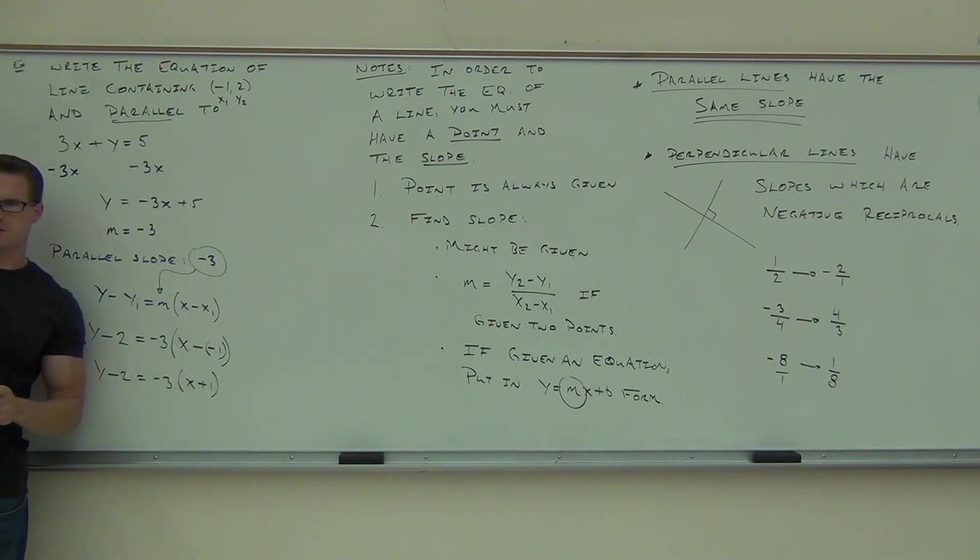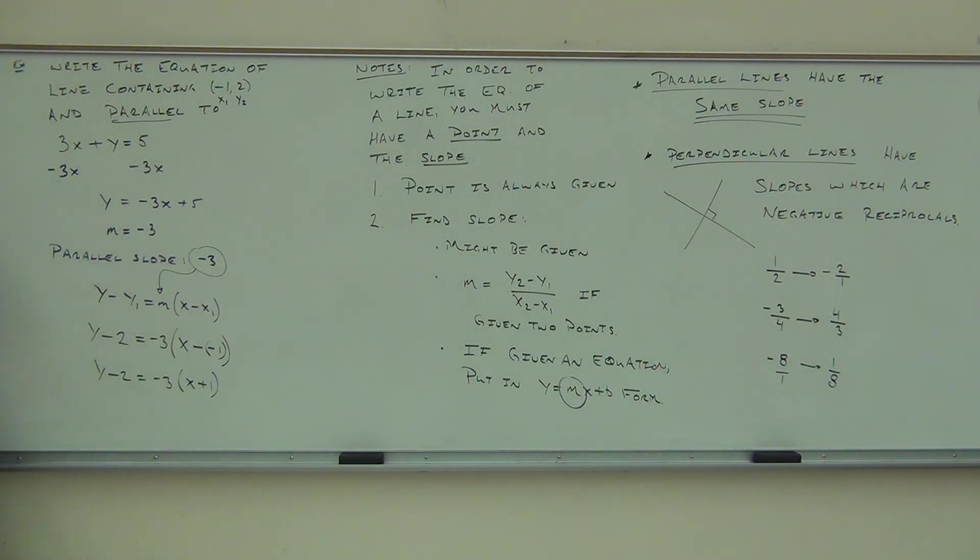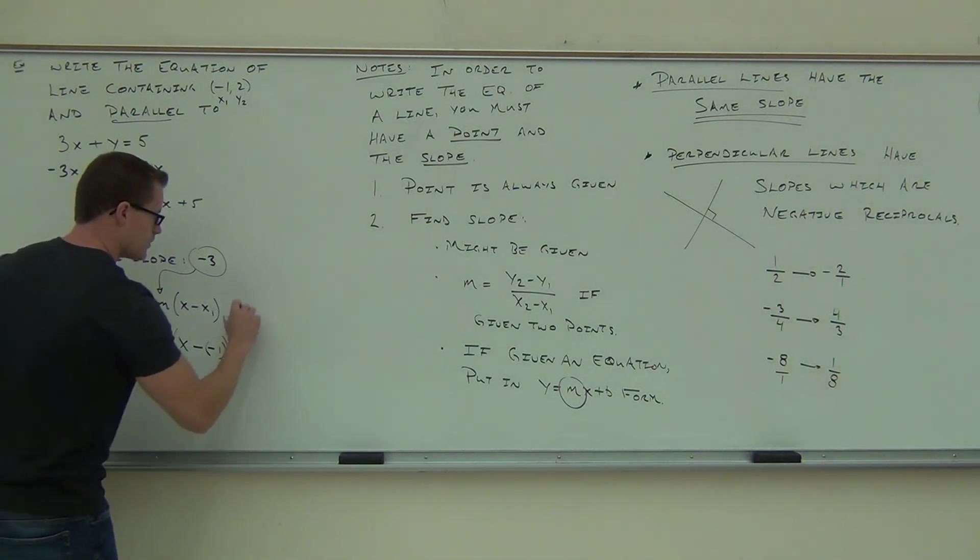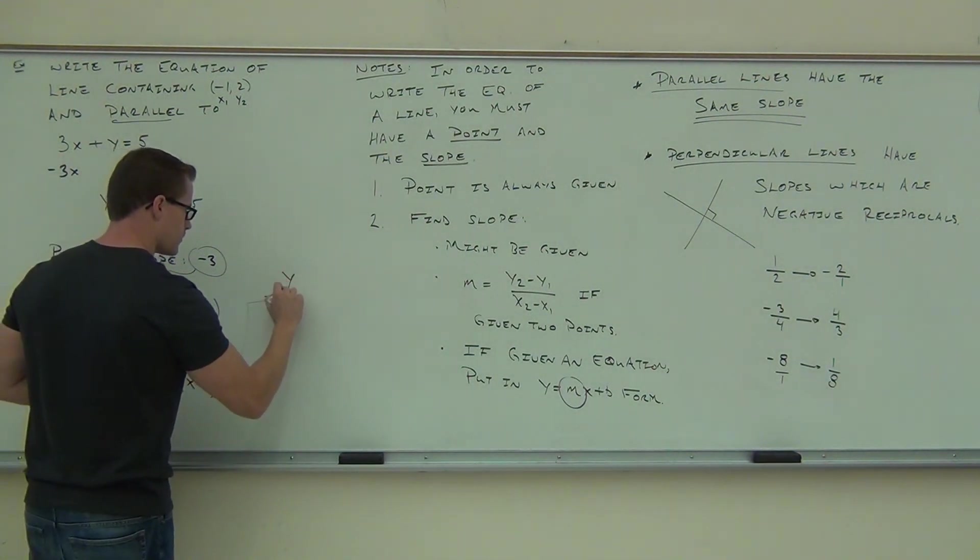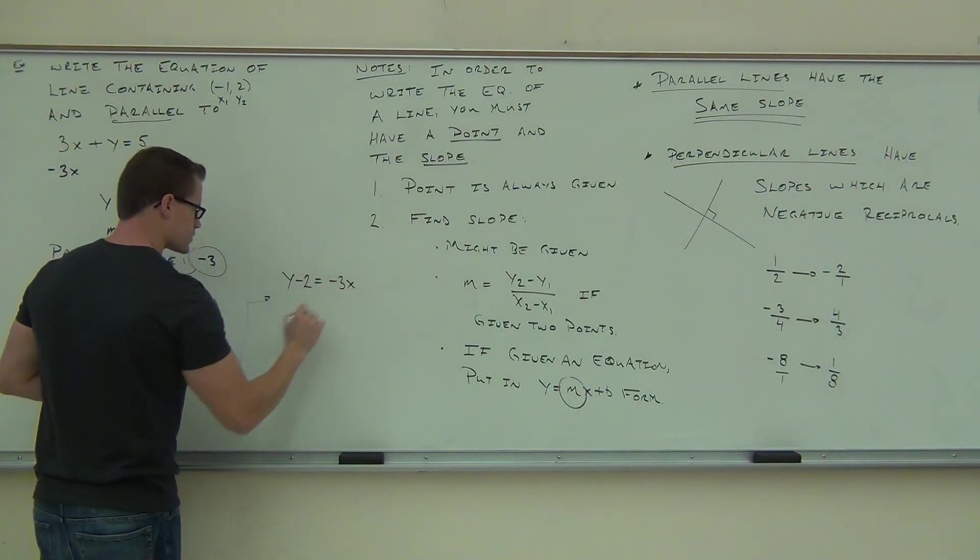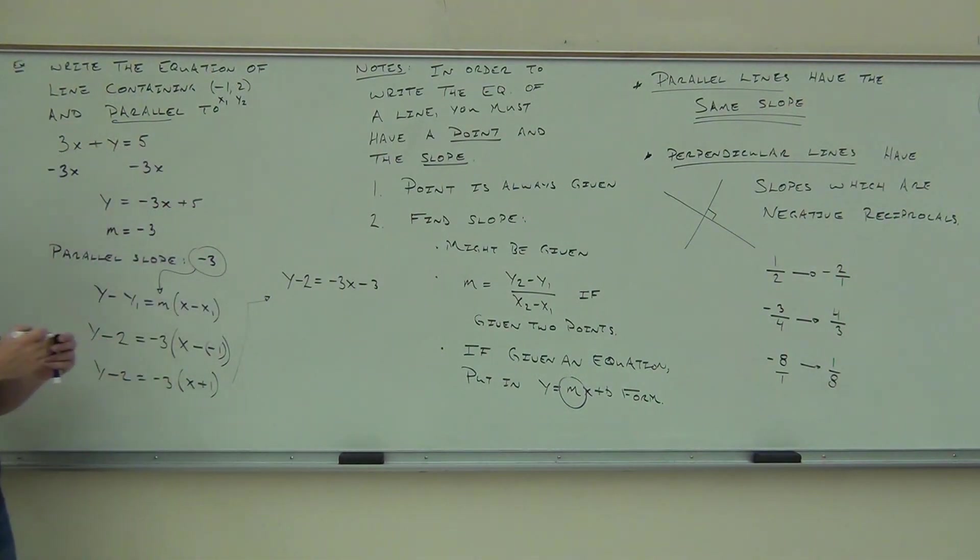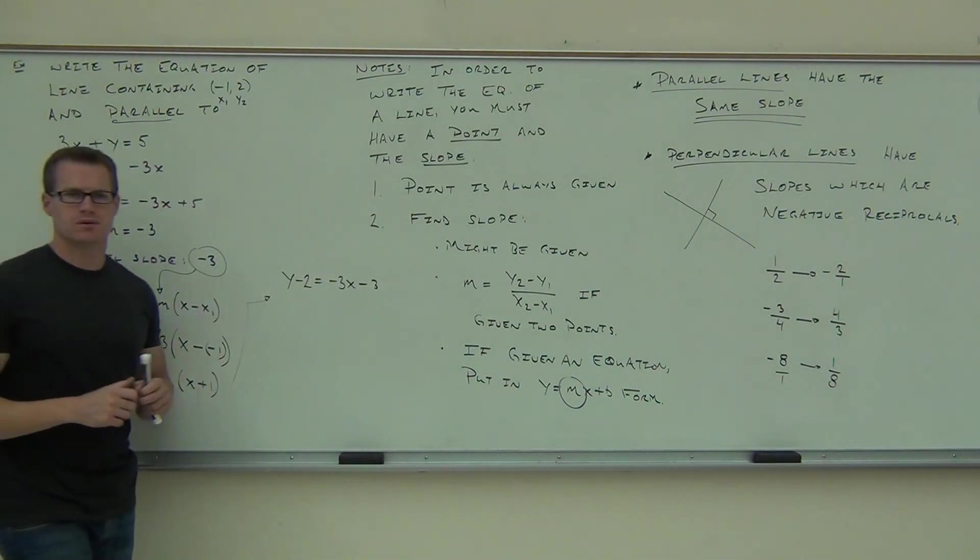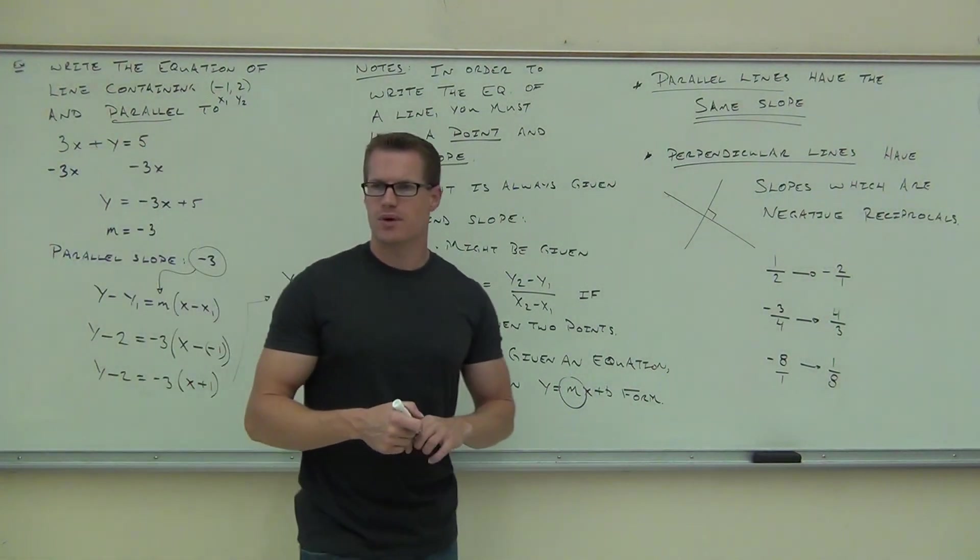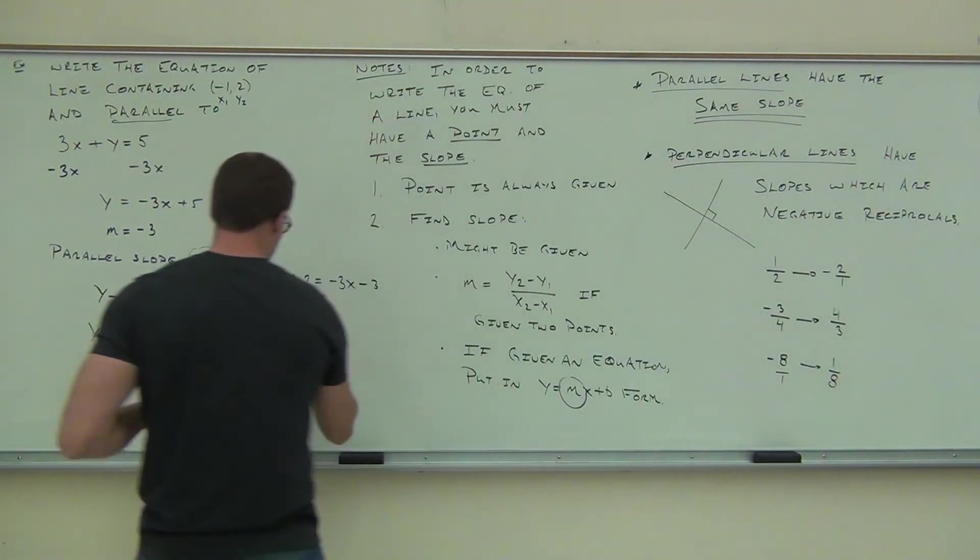I'm going to do the extra step so you see where it's coming from. We have y minus 2 equals negative 3 times x plus 1. Raise your hand if you're okay getting that far for me. Good. Now this is the point slope, but oftentimes we like to write this in slope intercept. So we're going to have to go down a little bit further and solve this for y. How do I solve this for y? That'd be a good first step. So we'll distribute that negative 3. So negative 3x and minus 3. And lastly, what are we going to do? Yeah, if we add 2 to both sides, we're going to have solved this for y. That'll be great. That's what we want.